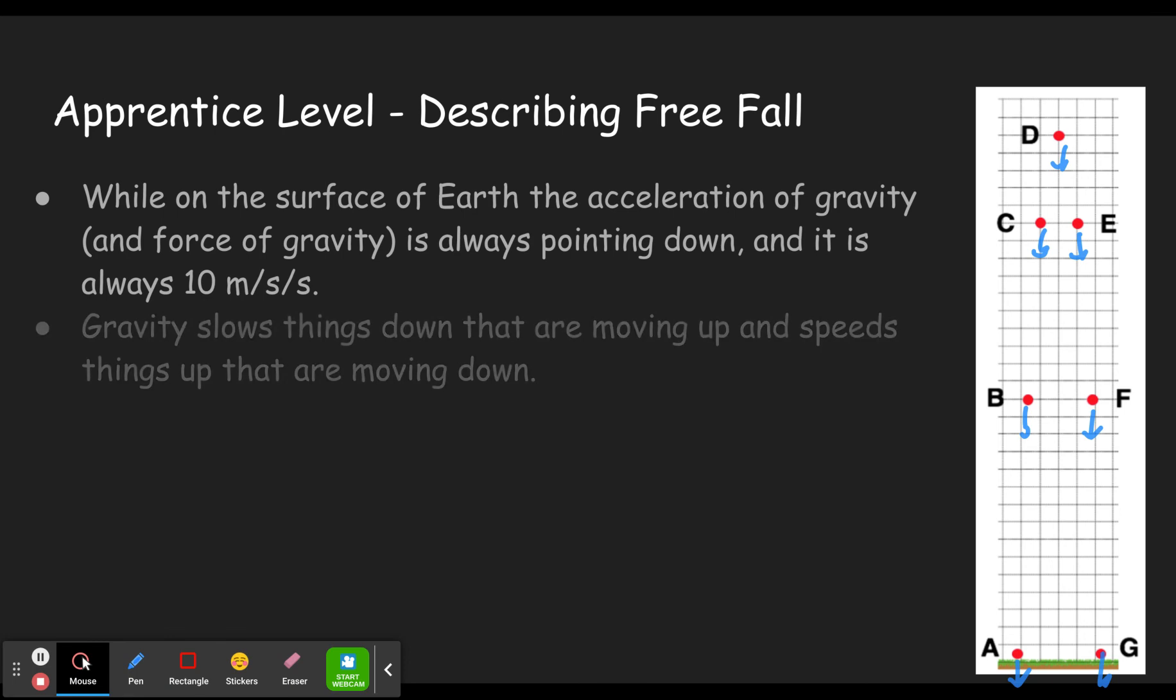Then second, gravity slows things down that are moving up and speeds them up if they're moving down. Since acceleration is down, if it started with 30 meters per second, then next it would be going 20 meters per second, and then it'd be going 10 meters per second, and then it would be stopped. It'd be at zero up there. And then it'd be going down. But as it goes down, it's going to speed up because it's accelerating down.